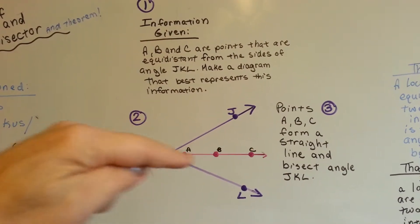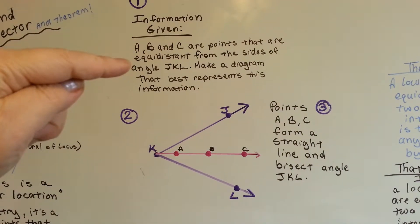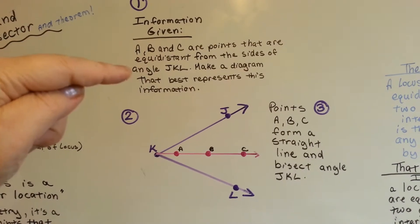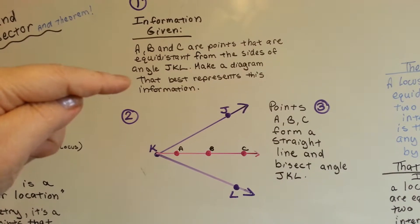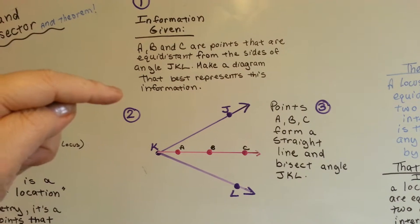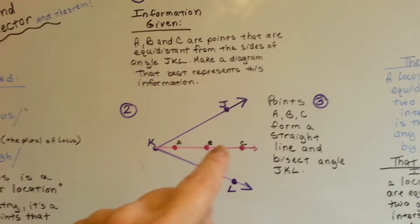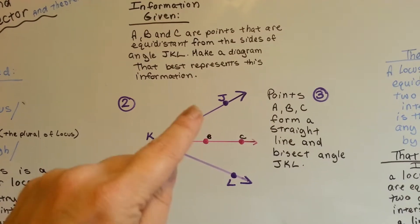A, B, C are points that are equidistant from the sides of angle JKL. Make a diagram that best represents this information. So these are equidistant from the sides of J, K, L. J, K, L are making an angle.